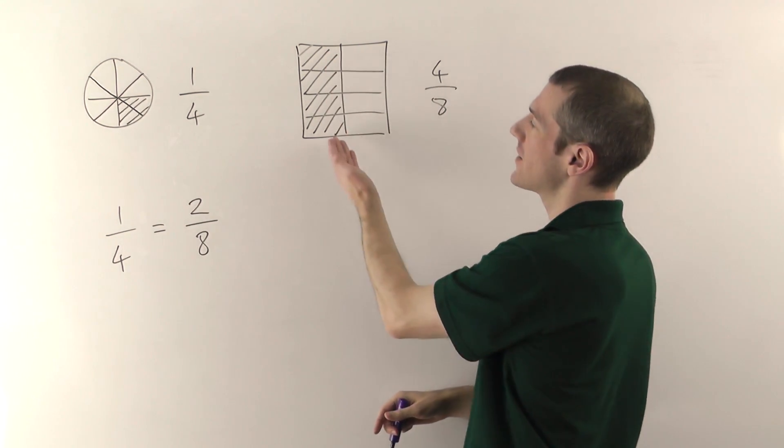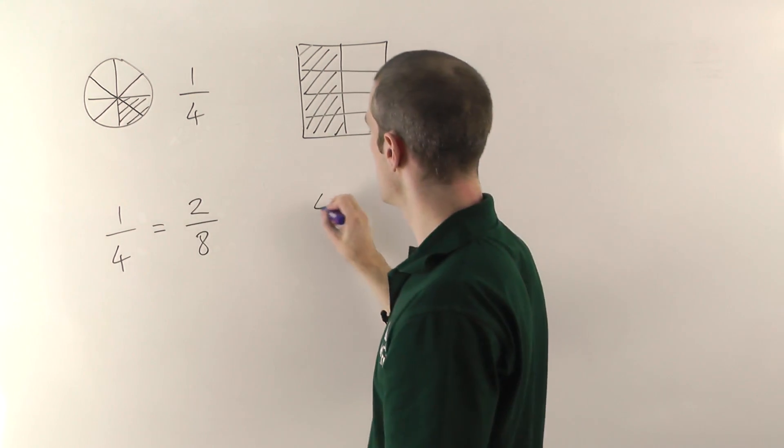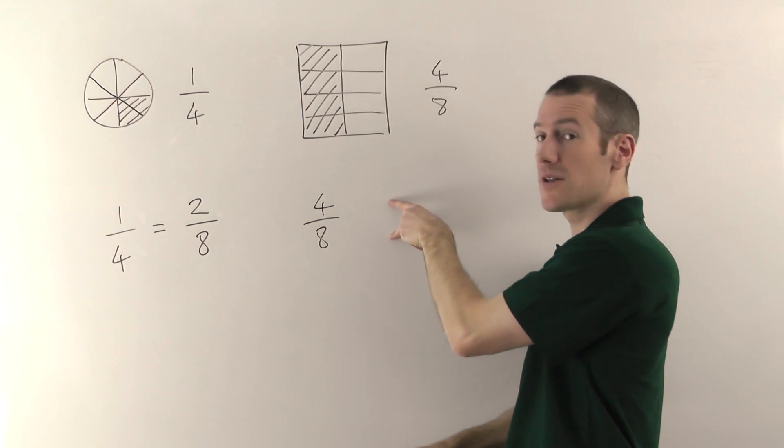And it works the other way as well. If you take a fraction like this, four-eighths, you can divide the fraction down to make the number smaller.